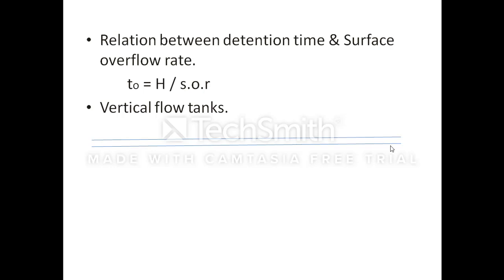The vertical flow tank is circular or square in shape at the top, with dimensions decreasing towards the bottom. The water flows in the vertical direction. The sludge in the vertical flow tank is removed by sludge pipes. This was the end of this lecture.